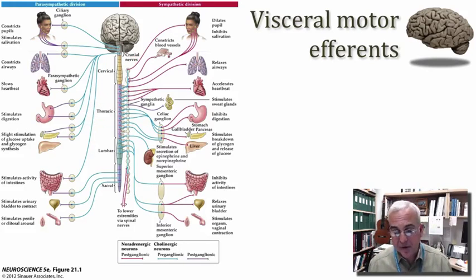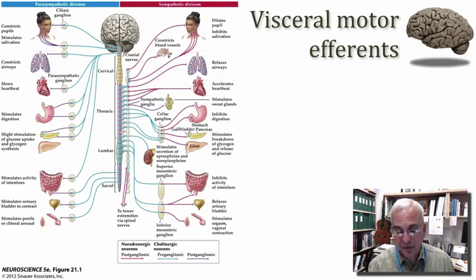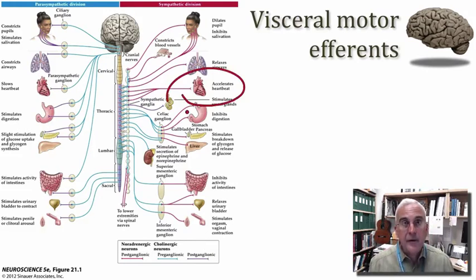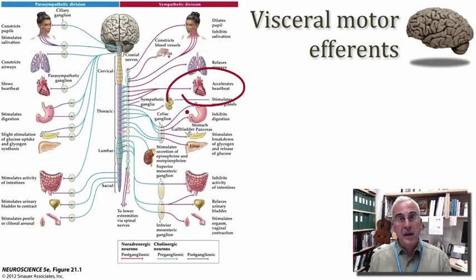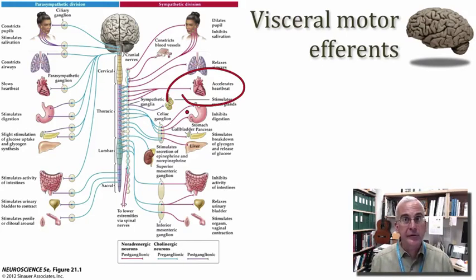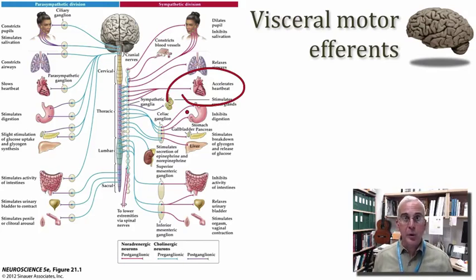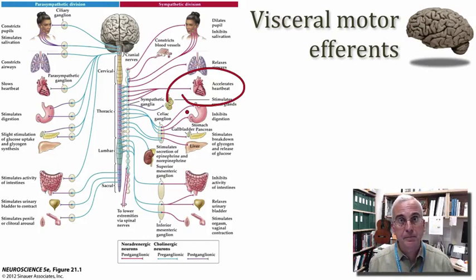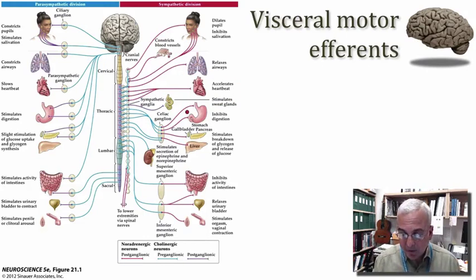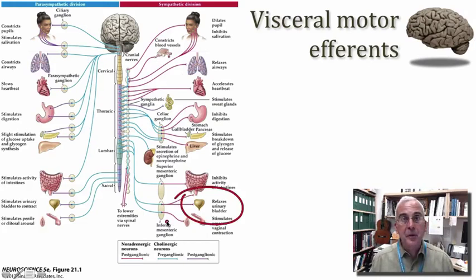Let's look at the function of the sympathetic division with respect to the heart. When there is activation of these preganglionic neurons and the postganglionic elements, the beating of the heart accelerates and the contractility of the left ventricle increases, thereby increasing cardiac output. The sympathetic system is associated with supplying a greater volume of blood to the body for those times when it is especially in need of extra energy in the form of oxygen and glucose.